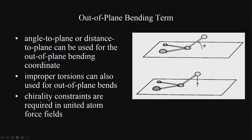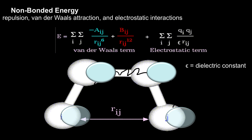For out-of-plane bending, imagine a molecule with 4 atoms where 3 are on a plane and one is above. This is called the out-of-plane bending term, and either angle-to-plane or distance-to-plane can be used — also called improper torsions for out-of-plane bending. Chirality constraints are required in united atom force fields.